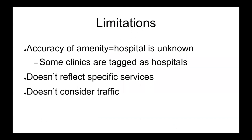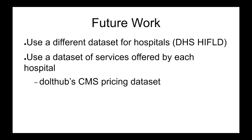There are also some limitations I did not address. The accuracy of the OpenStreetMap data is somewhat unknown — when doing sanity checks I found some clinics and even veterinarian offices tagged as hospitals. Another limitation is that this doesn't reflect specific services offered, such as trauma centers or specialty medicine required in an emergency. Lastly, it doesn't consider traffic, which would affect urban areas more than rural areas. In future work, I might explore different datasets, such as the Department of Homeland Security's HIFLD hospital dataset, or the Medicare provider dataset, which includes services offered by each hospital.